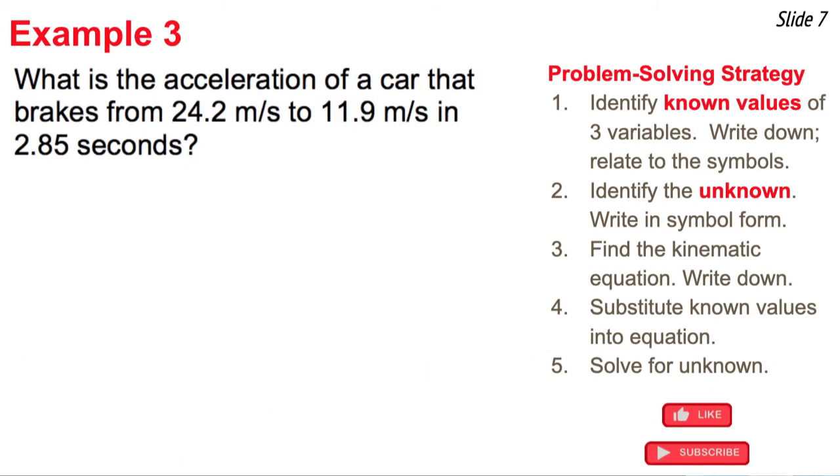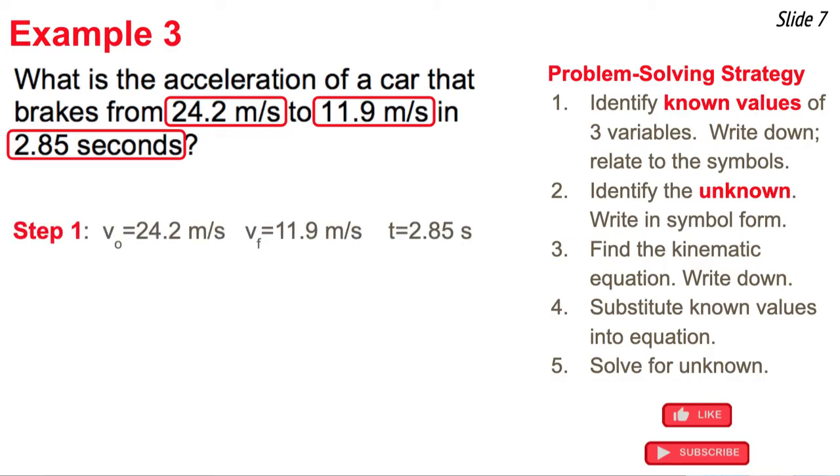This is our third and final example. What is the acceleration of a car that breaks from 24.2 meters per second to 11.9 meters per second in 2.85 seconds? There's the three values. Now the first one, the 24.2 meters per second, is an original velocity. That's V subscript O. And the 11.9 meters per second, that's a final velocity. That's V subscript F. And the 2.85 seconds, that's the time. So I write these three known values down, and I relate them to the symbols in the four kinematic equations.